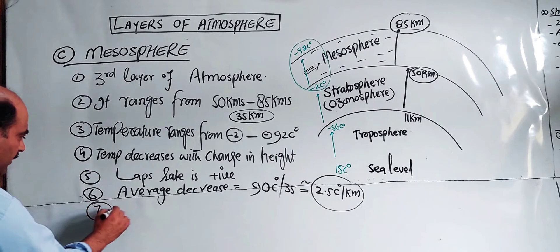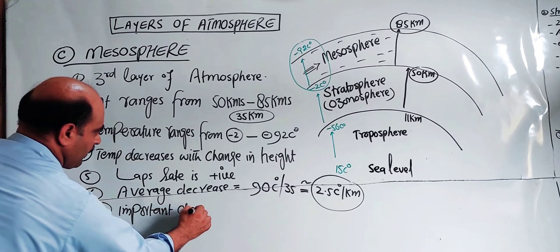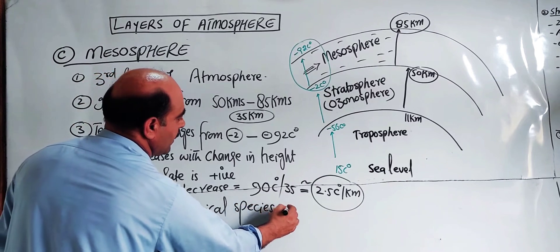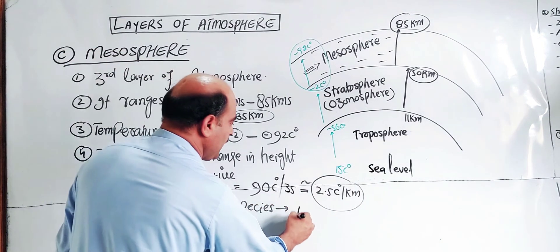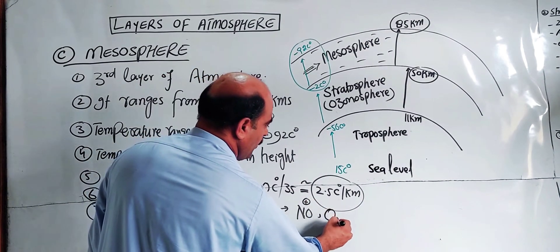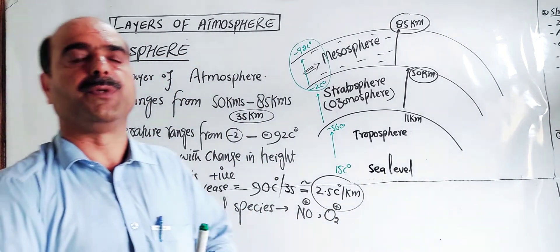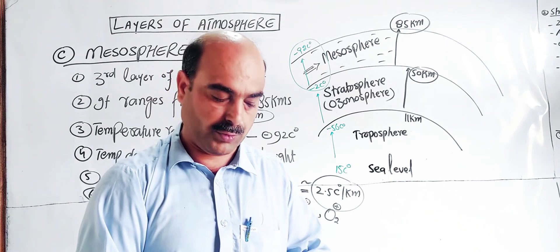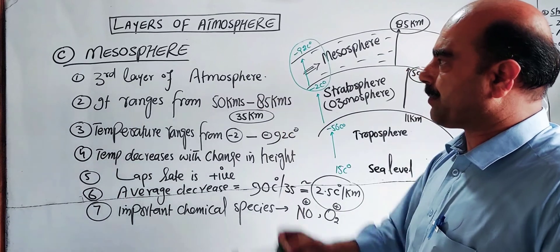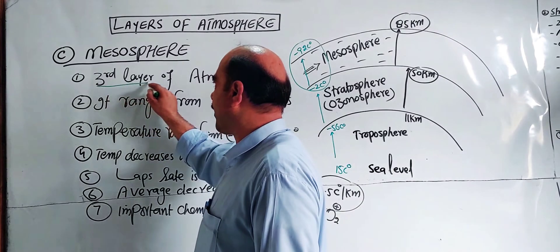The important chemical species present in the mesosphere include nitric oxide, oxygen molecules, and their ionic forms. So these are the key characteristics of the third layer of atmosphere, which is the mesosphere. First: it is the third layer of atmosphere.